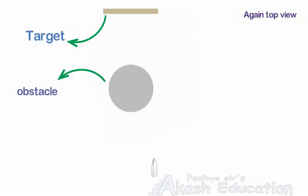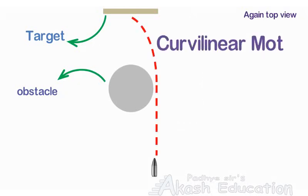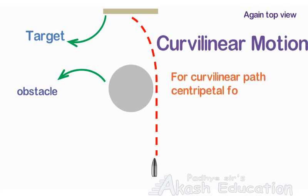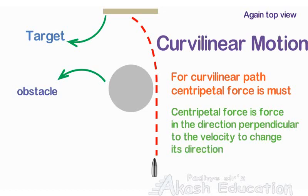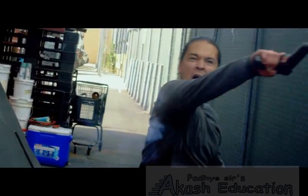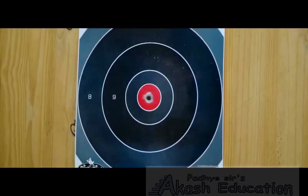Here the guy is asking to curve the bullet. So let's consider curvilinear motion. To make any object follow a curvilinear path, there should be some external force which acts as centripetal force. Centripetal force is any force which acts in the direction perpendicular to the velocity of the object to change its direction. From the video, we can easily see that there is no force which acts as centripetal force. Hence, curving the bullet by this method is not possible.